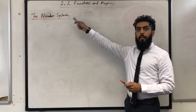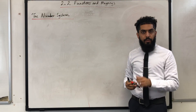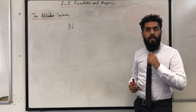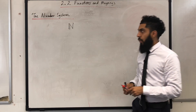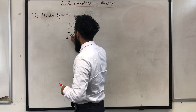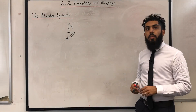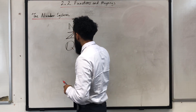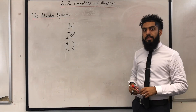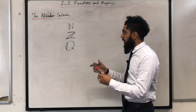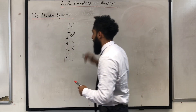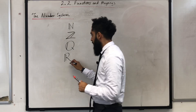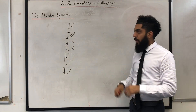We are now going to move on to the number system. The smallest number system is the set of natural numbers, symbolized by ℕ. The second smallest is the set of integers, symbolized by ℤ. The third smallest is the set of rational numbers, symbolized by ℚ. The fourth smallest is the set of real numbers, symbolized by ℝ. The largest number system is the set of complex numbers, symbolized by ℂ.